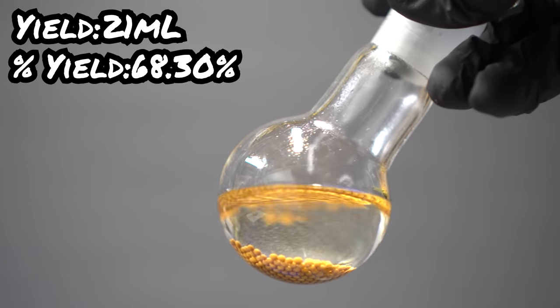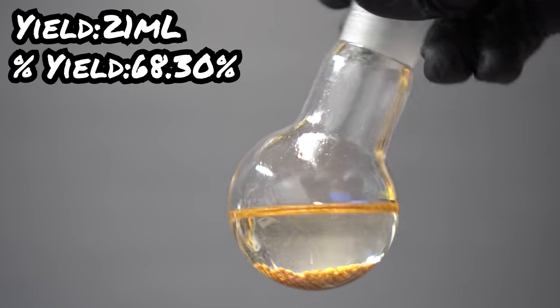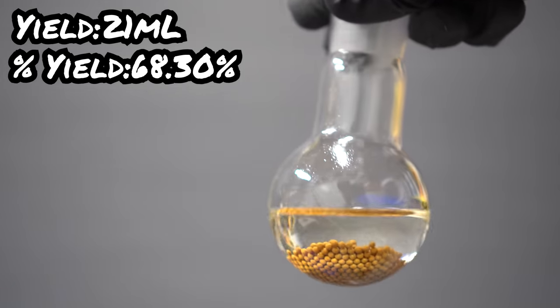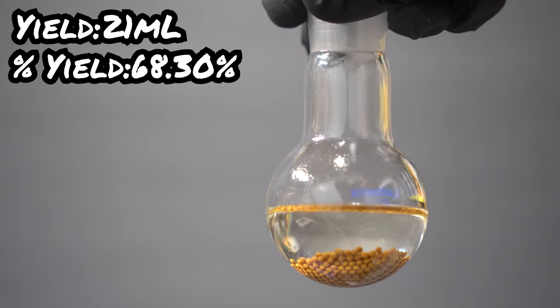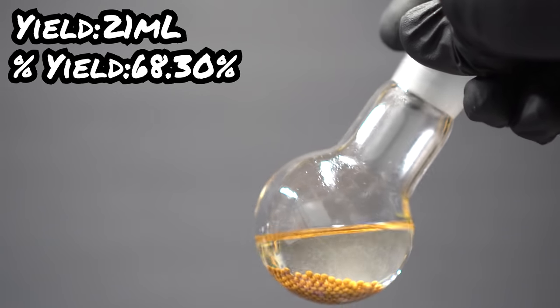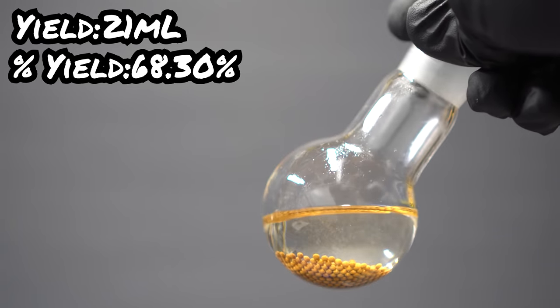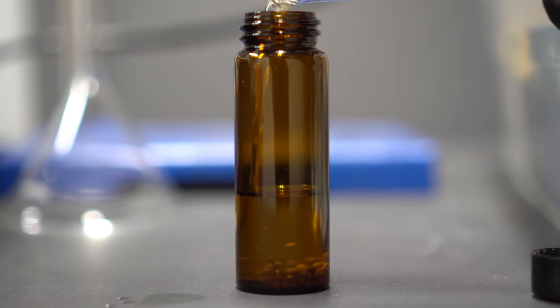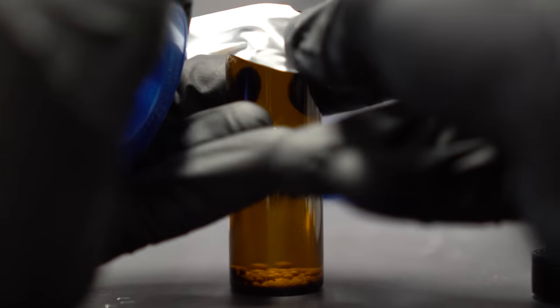My yield came out to be about 21 milliliters, and this equates to a percent yield of 68.3%. All I did was filter the pyridine through a coffee filter, and I measured in a graduated cylinder. I stored the pyridine in an amber glass vial with some fresh molecular sieves at the bottom. I actually need the pyridine for a future video, but I really don't want to give this surprise away.